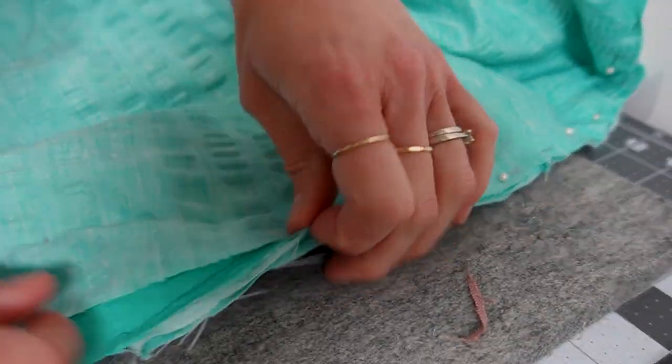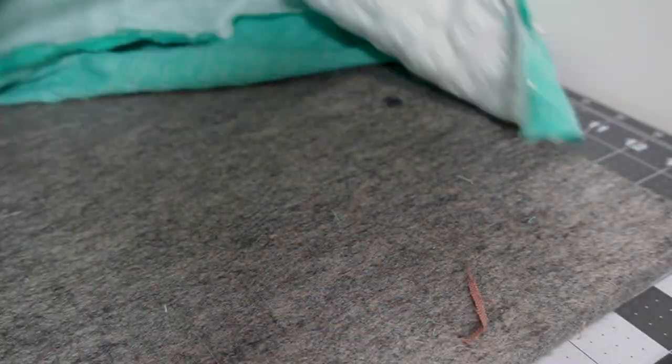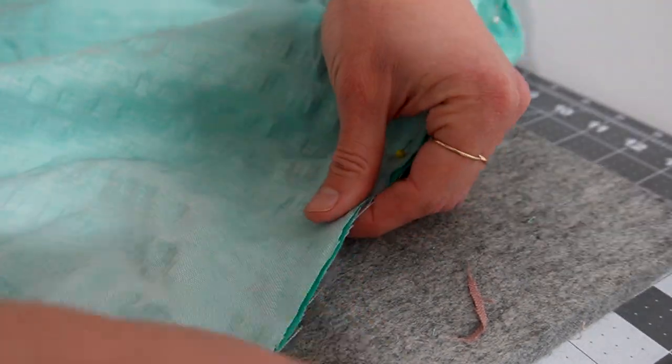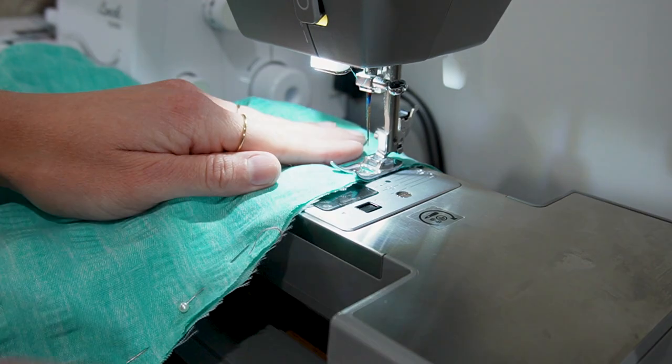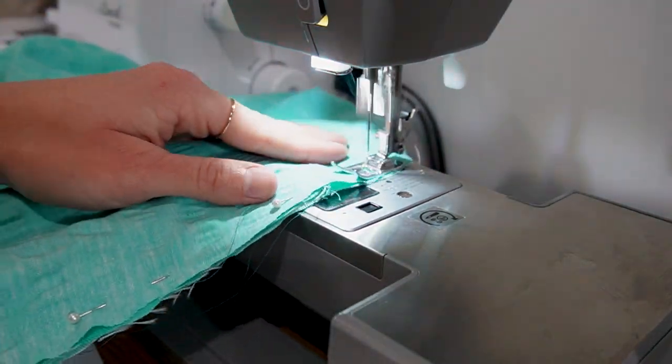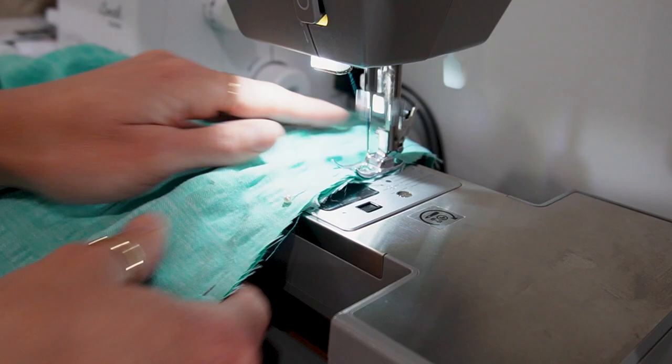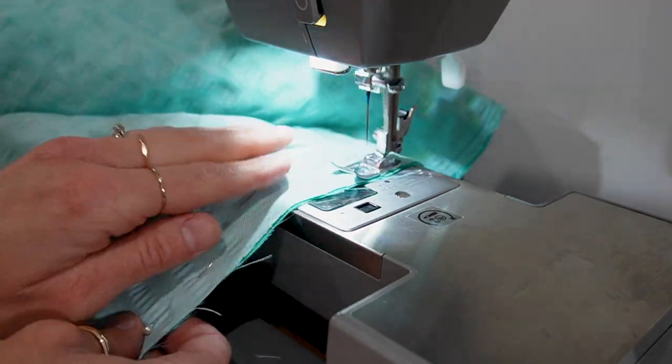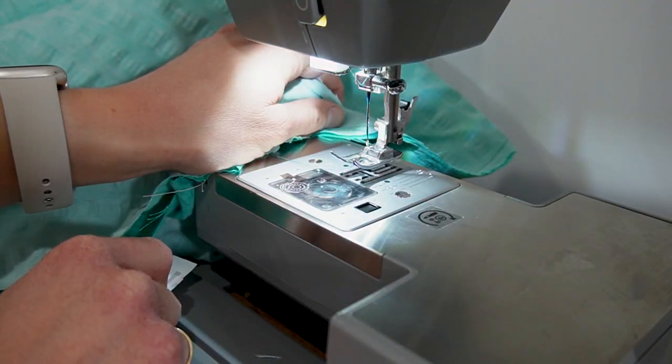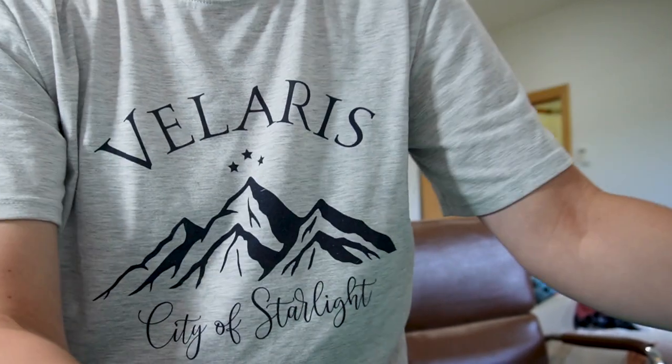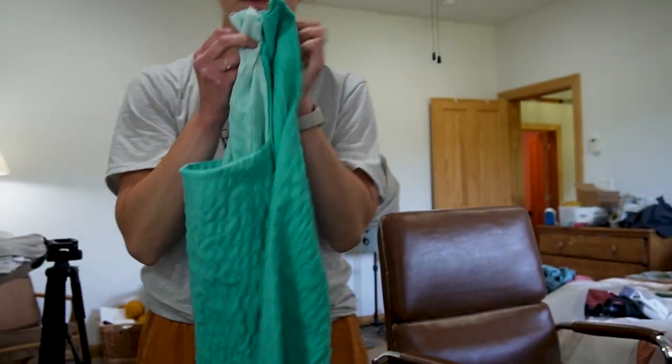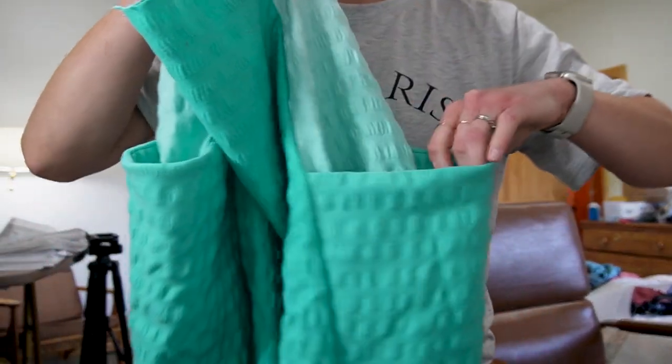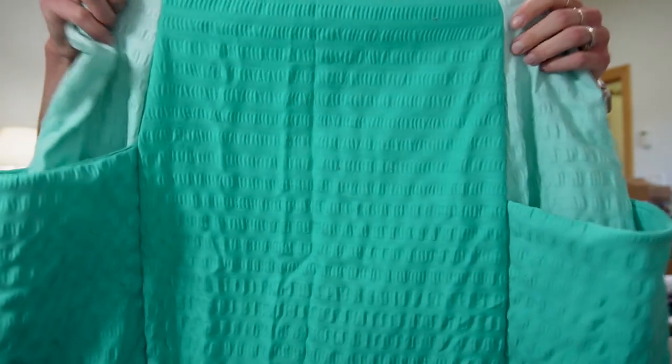Next you'll be attaching your back center panel to the side panels which will create the completed circle and skirt. Once you're done sewing the center back panel into the two side panels, you're going to have what will actually resemble your skirt. Now at this point you haven't serged any of the edges; you'll do that in the next step. But here is where you should be at at this point. I can't help it, I just love these pockets!